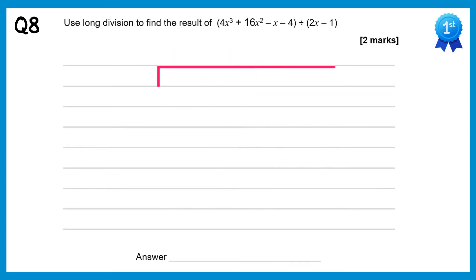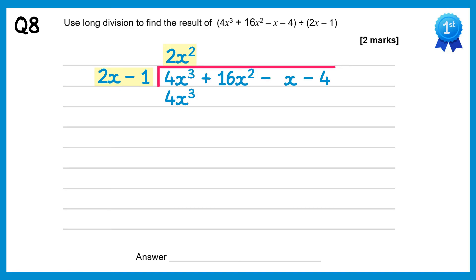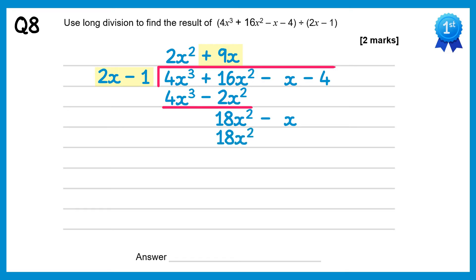We put the cubic inside the bus stop and the linear term outside. Do 4x cubed divided by 2x which gives 2x squared. Multiply back through: 2x squared times 2x is 4x cubed, 2x squared times negative 1 is negative 2x squared. Subtract: the 4x cubes will cancel, and 16x squared take away negative 2x squared gives 18x squared. Bring down the next term. Do 18x squared divided by 2x which gets 9x. Multiply back through: 9x times 2x is 18x squared, 9x times negative 1 is negative 9x. Subtract: 18x squareds will cancel, negative x take away negative 9x is a positive 8x.